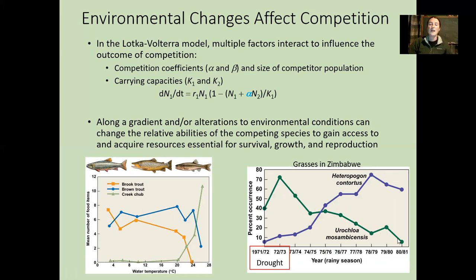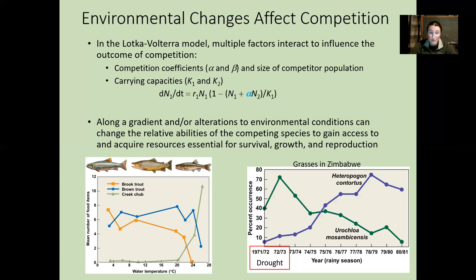We can also see this shift in competition over time in the field. A graph from the textbook shows two different grass species in Zimbabwe over a ten-year period. In the first two years, the drought-adapted grass did really well. But as the rains returned, the other species — much better adapted to wet conditions — was able to outcompete the dry-adapted species. Once again, competition coefficients and carrying capacities are not fixed; they're tied to abiotic factors.